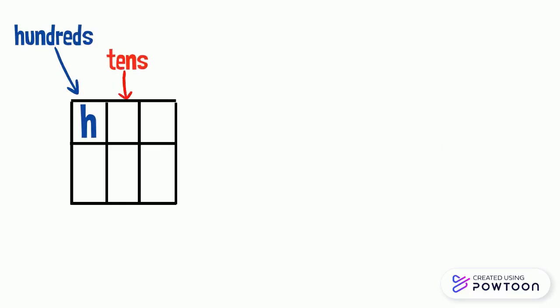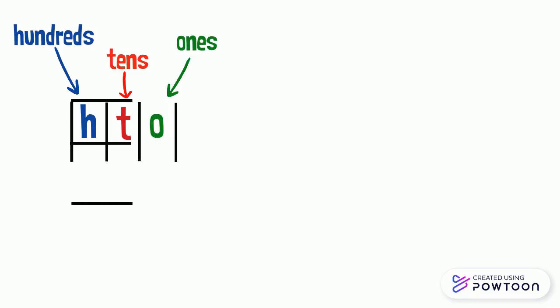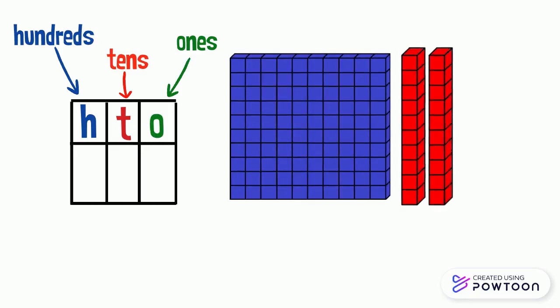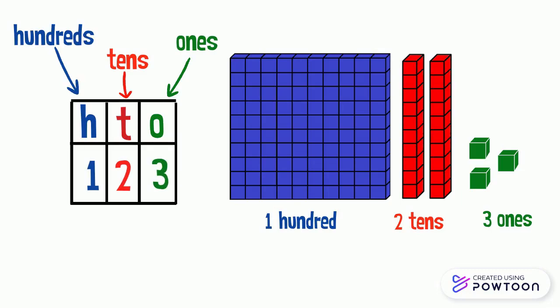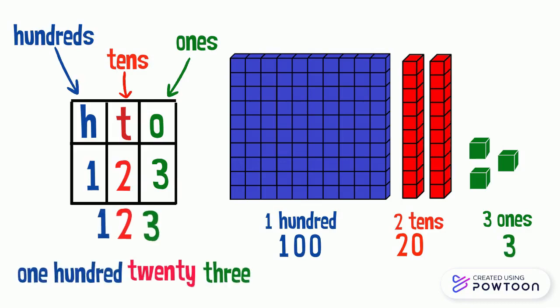This is a chart for the hundreds, tens, and ones digits. One hundred, two tens, and three ones. In the hundreds column we will write one, in the tens column we will write two, in the ones column we will write three. One block of hundred equals one hundred, two tens equals twenty, three ones equals three. So this number is one hundred twenty-three.